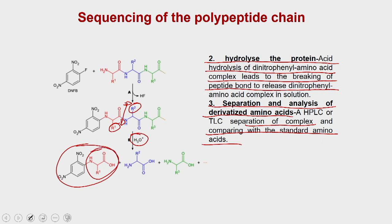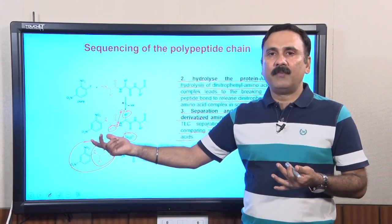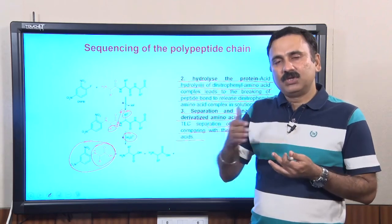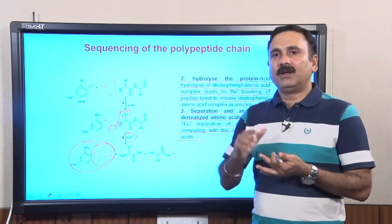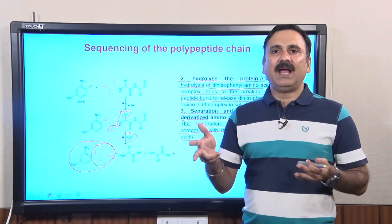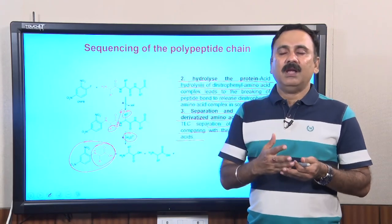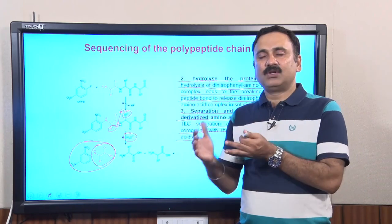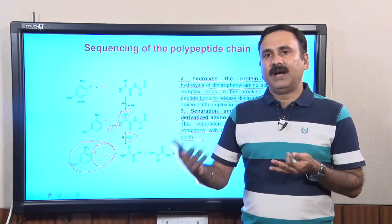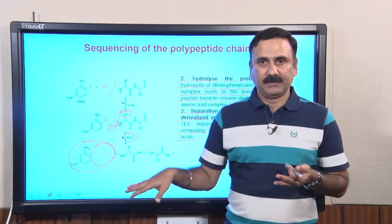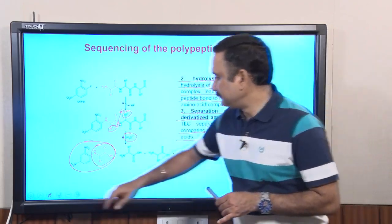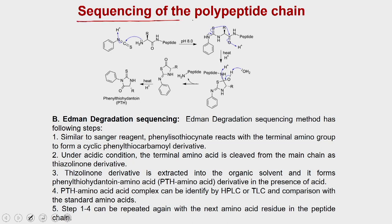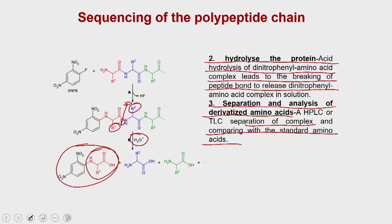Step three is separation and analysis of the derivatized amino acid. You inject the whole reaction into an HPLC or TLC machine, which separates the complex. By comparing the chromatogram against standard amino acid complexes run in parallel, you can identify which amino acid is present. This method was developed by Sanger and is called the Sanger sequencing technique.